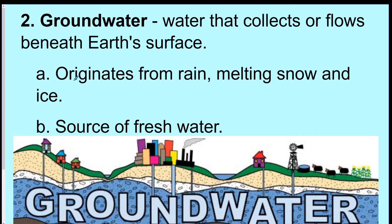Groundwater is water that collects or flows beneath the earth's surface, and it comes from rain, melting snow, or melting ice. It's one of our sources of fresh water. In the picture, there are pumps going from people's houses or the city into an aquifer, which is pretty much the area of groundwater underground.